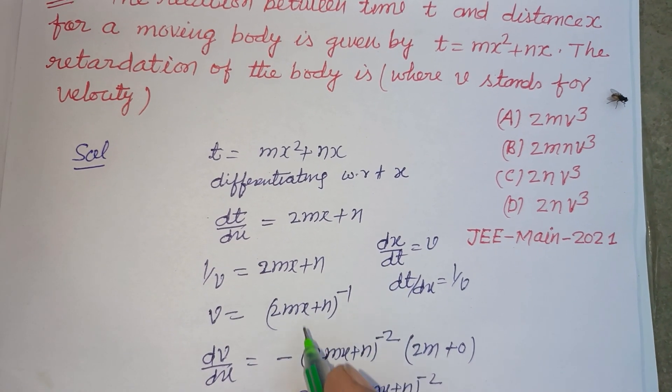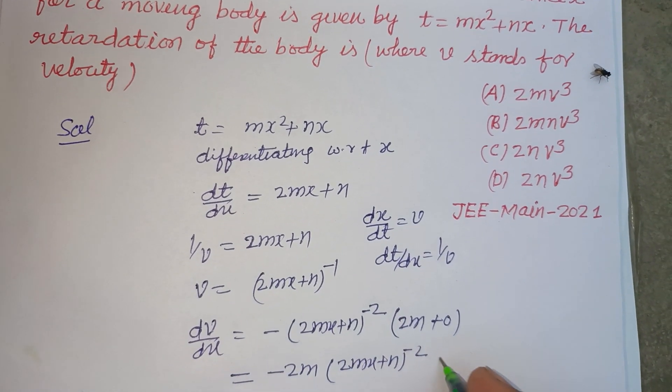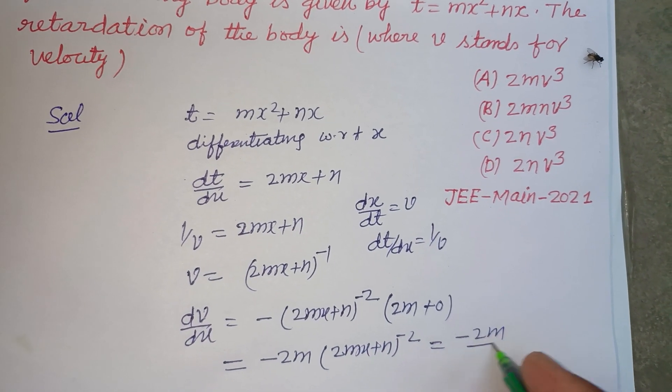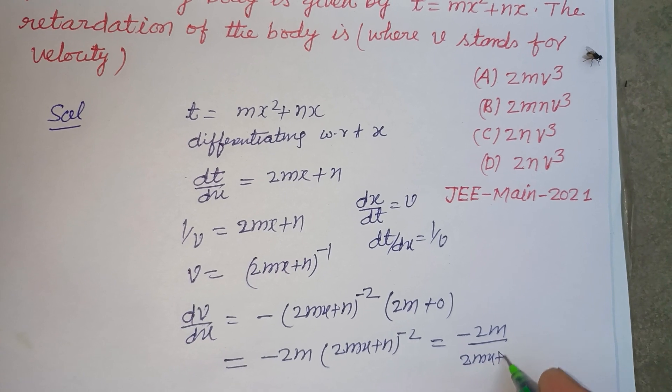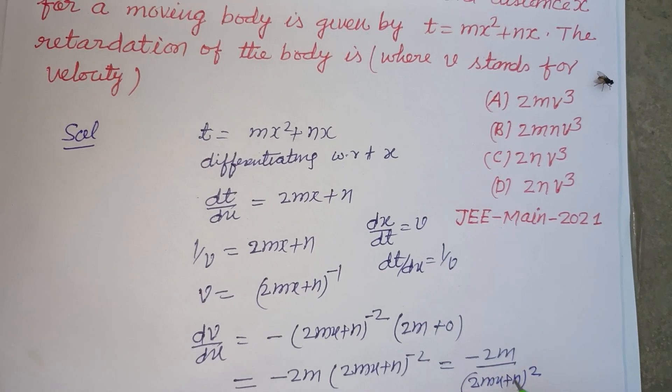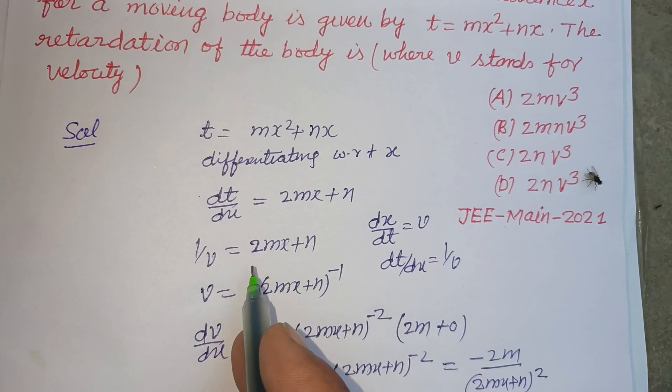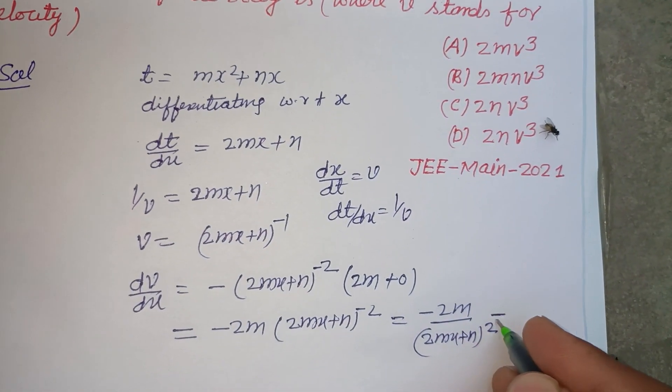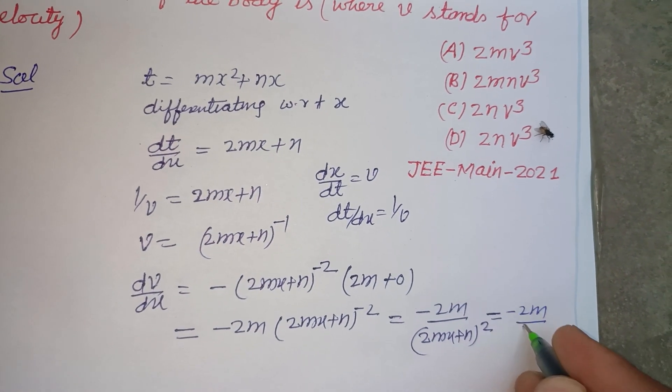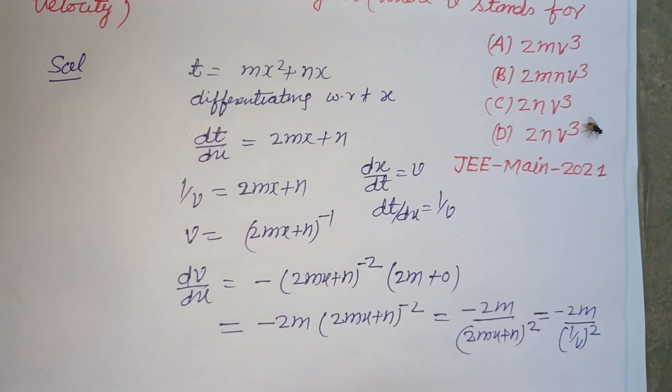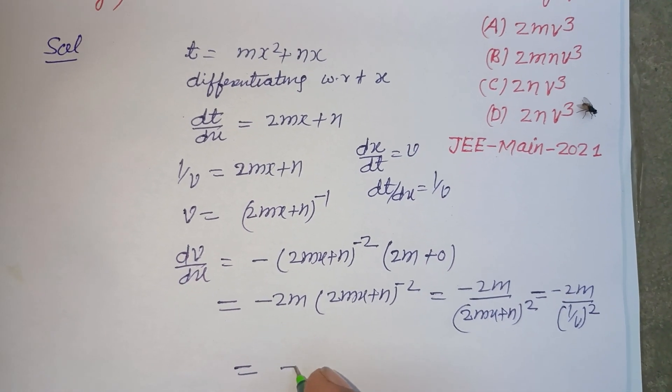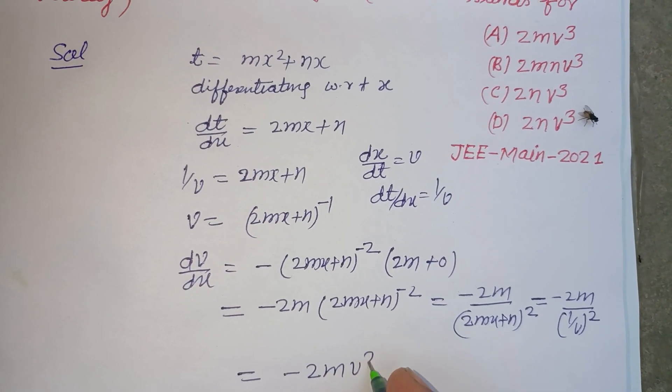And here we write it as minus 2m over 2mx plus n to the power 2. And what is this? This is 1 upon v. So this is minus 2m upon 1 upon v whole squared. So finally we got minus 2m v squared.